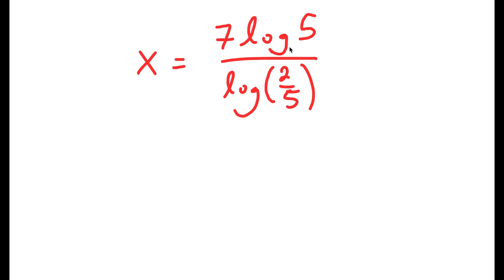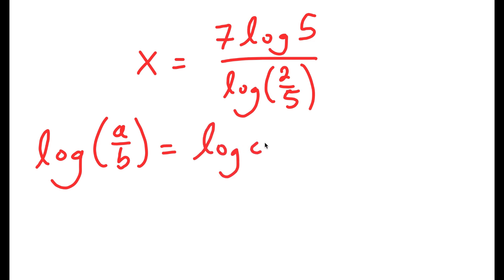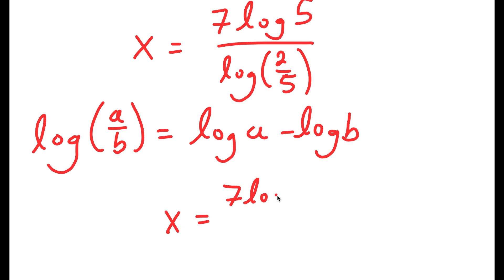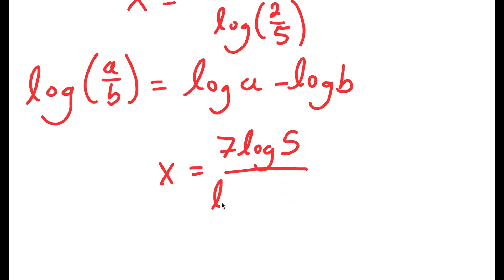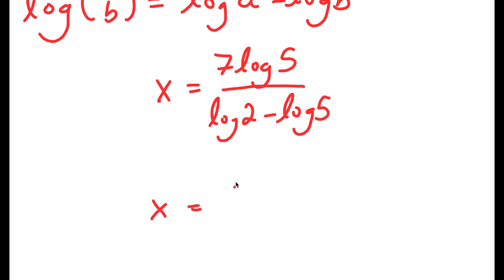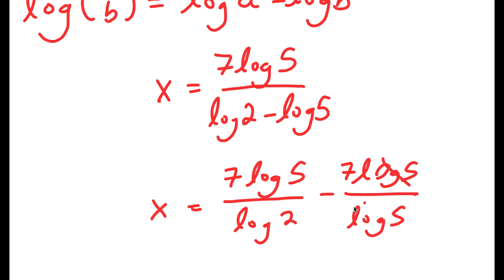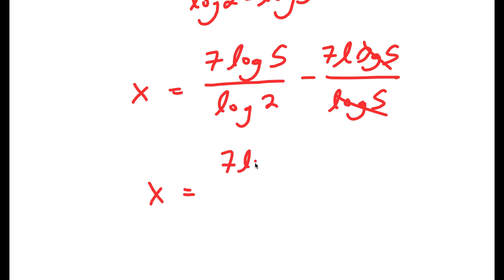We have our answer here — this is our solution, but there is a way to simplify it more. If I have something in the form log(a/b), this is equal to log a minus log b. So log(2/5) equals log 2 minus log 5. Substituting that in and simplifying, the log 5 terms cancel and I get 7 times log 5 over log 2 minus log 5, which equals 7 times log 5 over log 2 minus 7 times log 5 over log 5, simplifying to 7 times log 5 over (log 2 minus log 5).